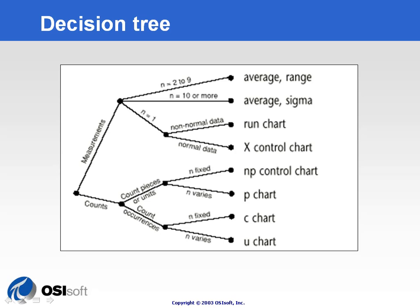On the count side, you can count pieces or units, or just occurrences. One is going to be a number of defects, the other is going to be a percentage, and those charts will be different. We'll talk about them later.